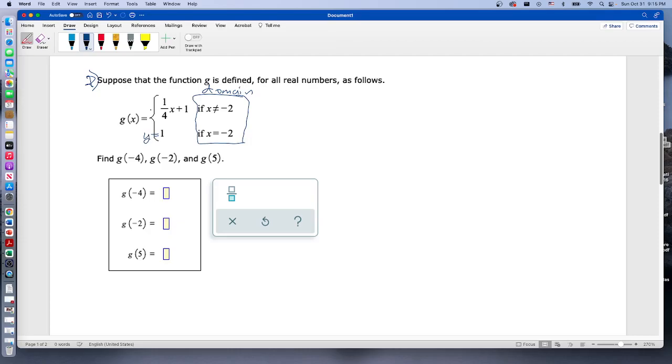This would just be y equals one if x is equal to negative two. This is y equals one-fourth x plus one. So we take our first one, g of negative four. We compare the domain: if x is negative four...